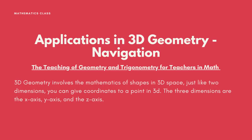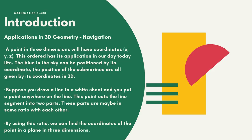3D geometry involves the mathematics of shapes in 3D space. Just like the two dimensions, you can give coordinates to a point in 3D. The three dimensions are the x-axis, y-axis, and the z-axis.